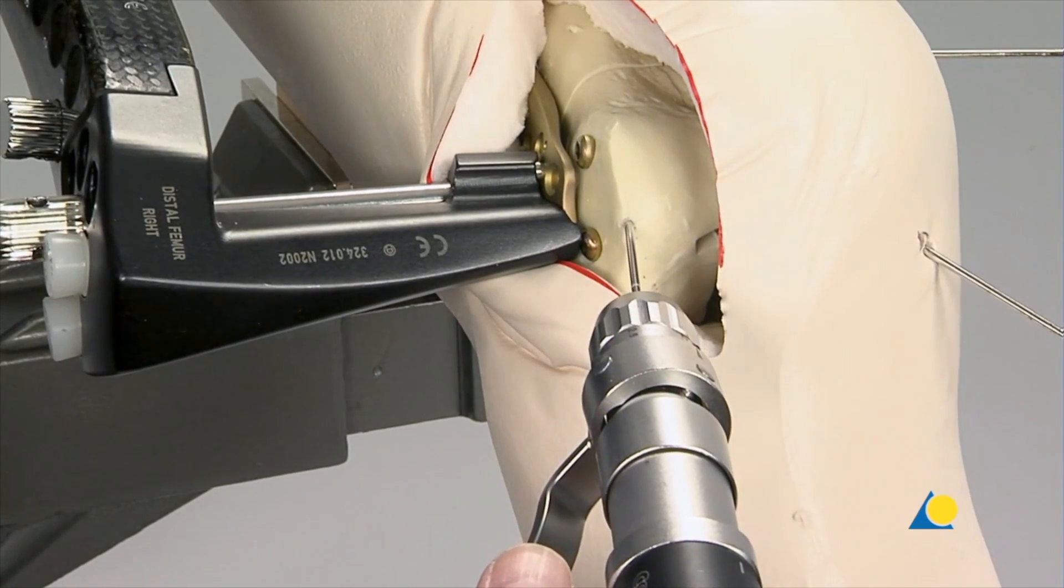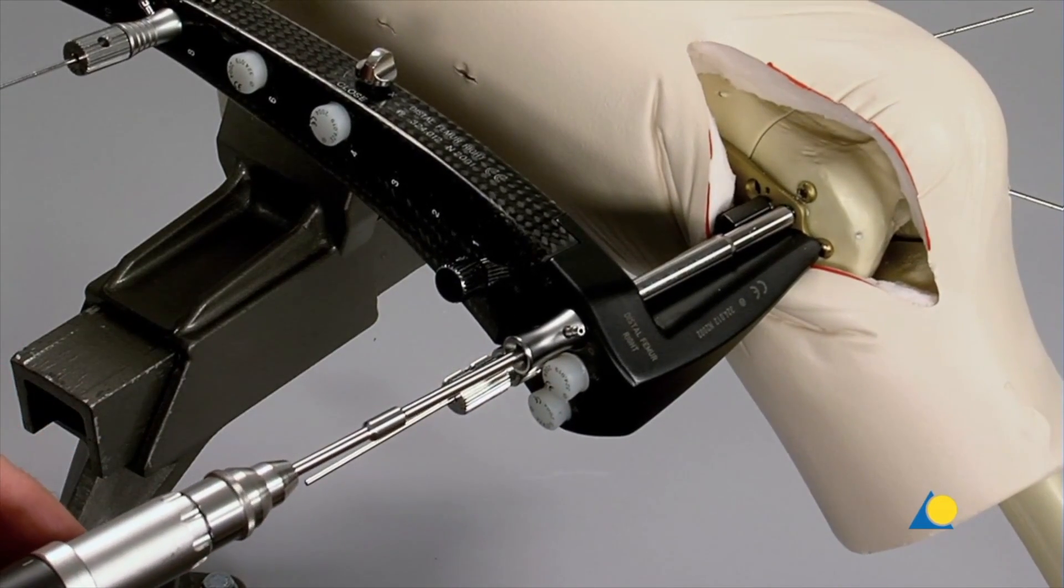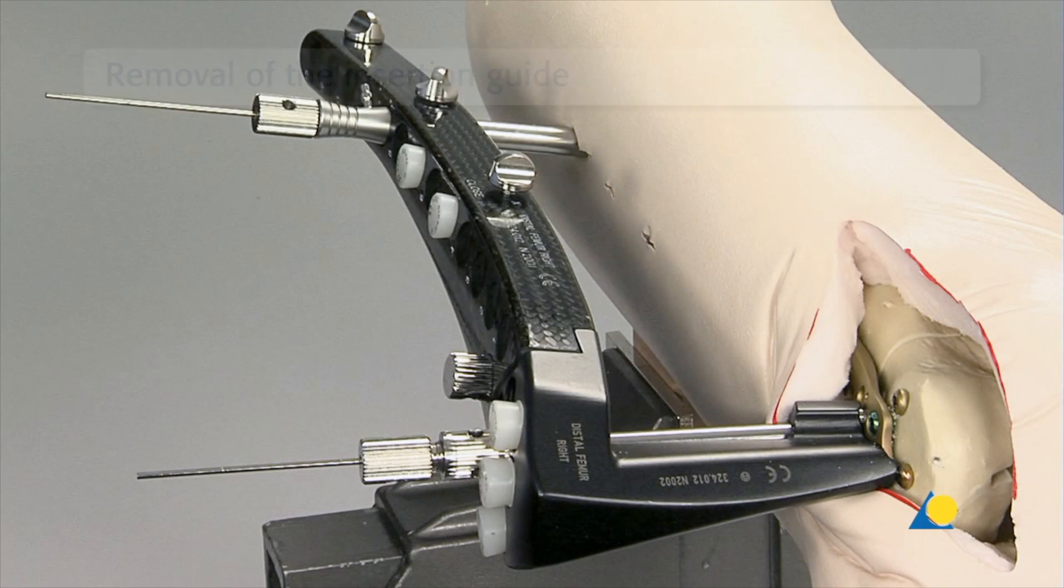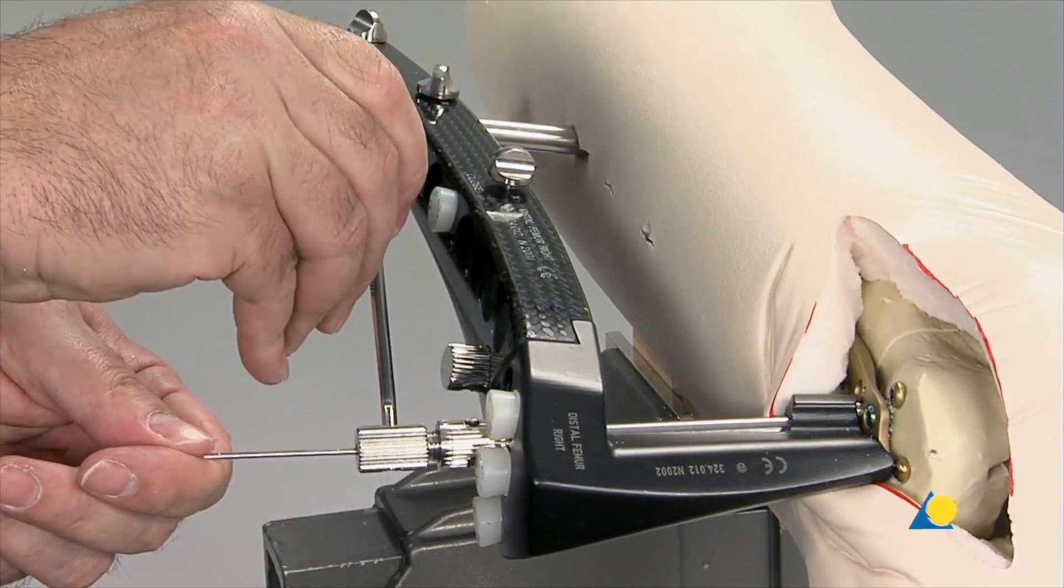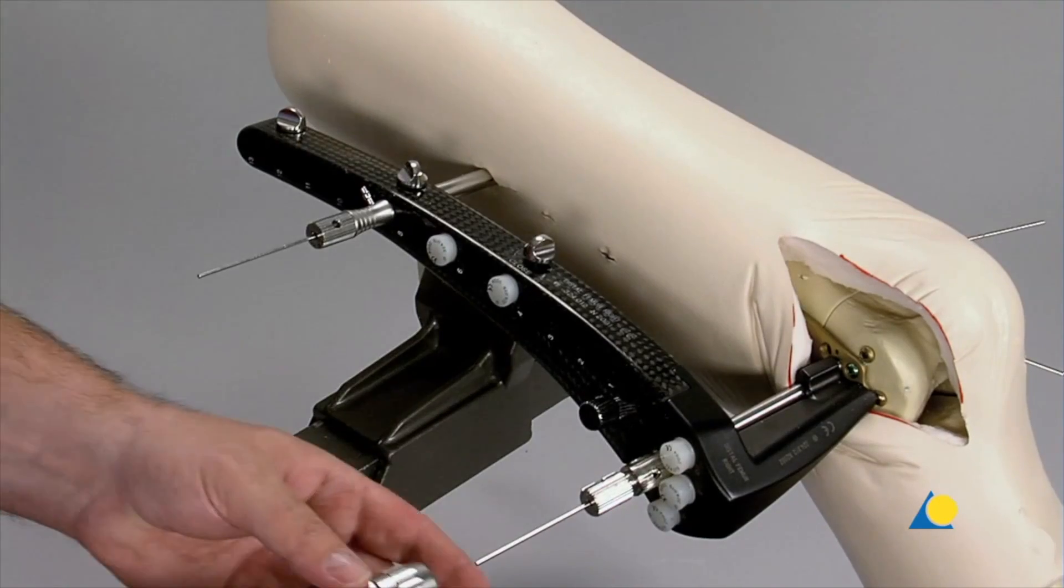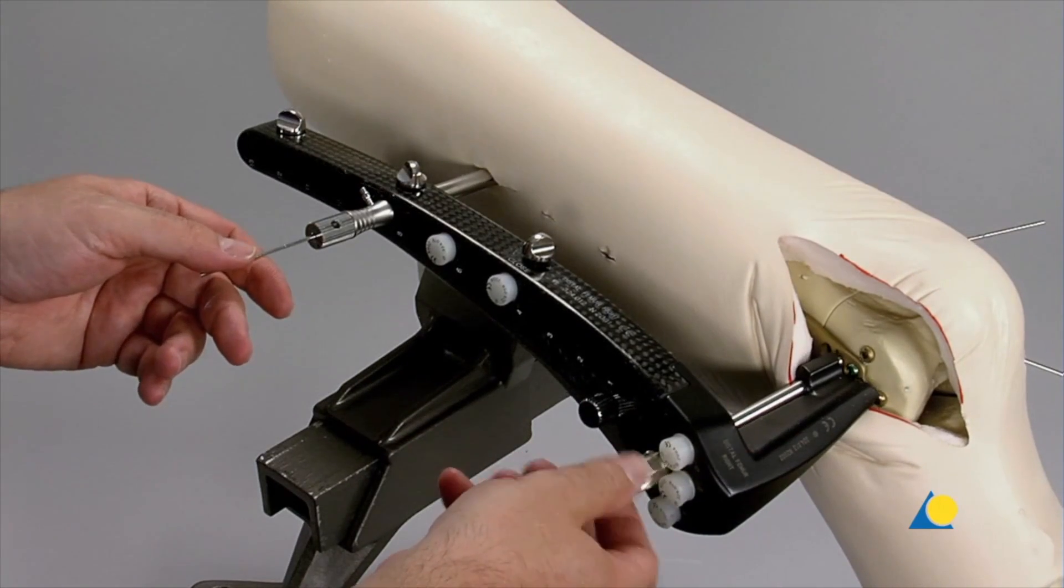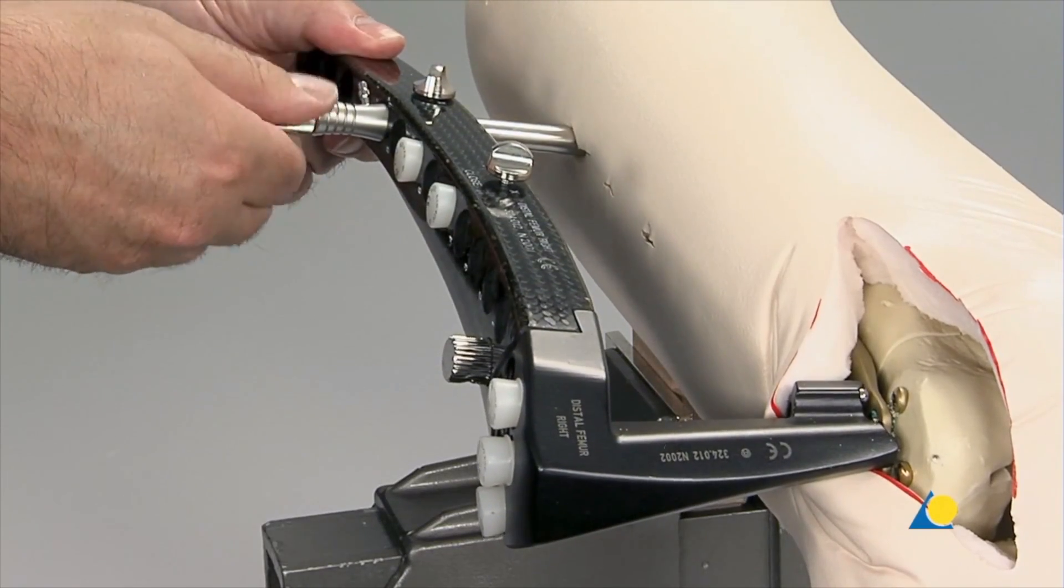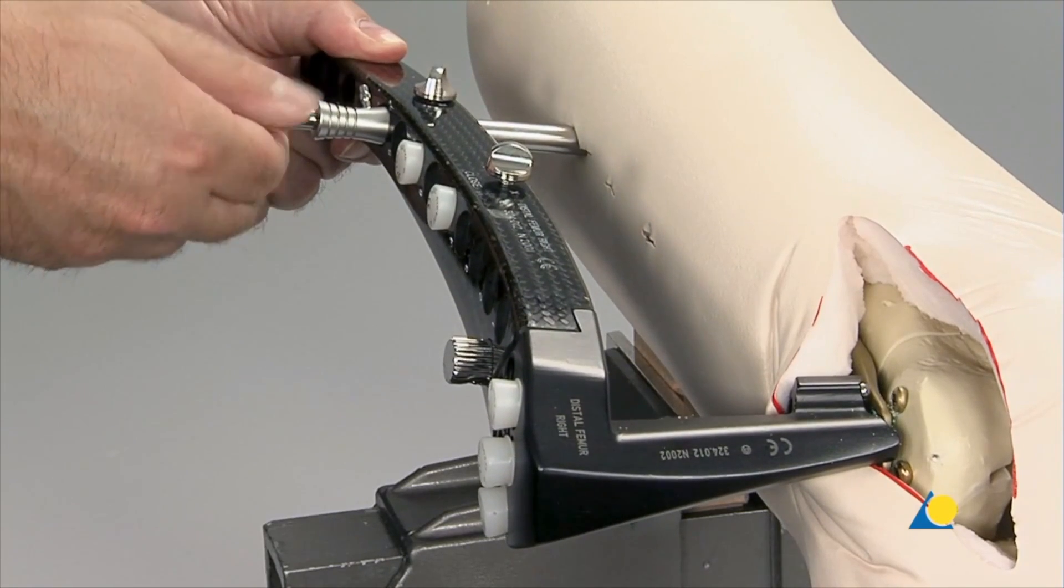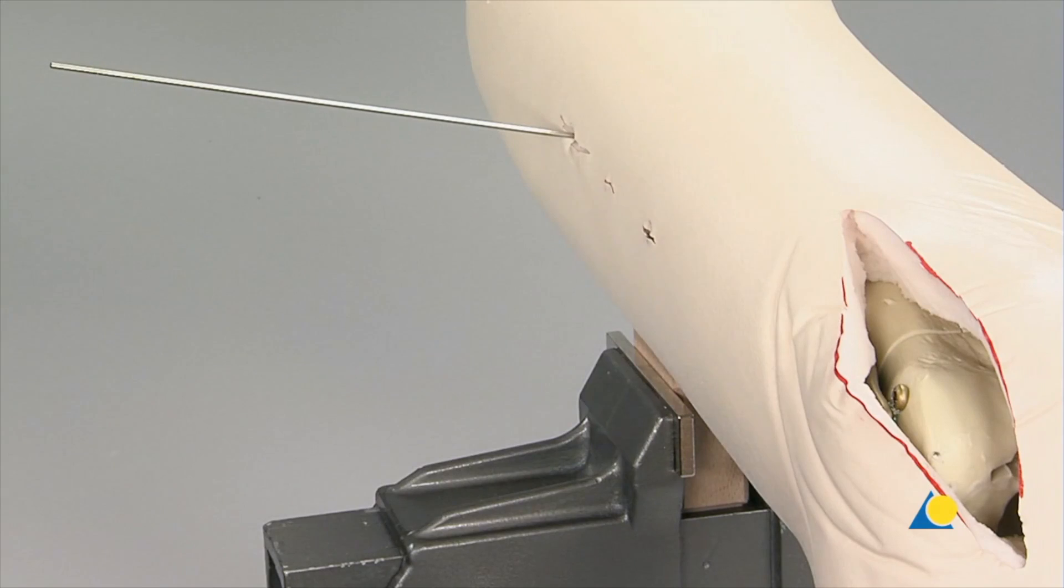Before introducing the next distal screw, the provisional K wire that secured the reduction is removed to avoid any interference during screw insertion. There may be some instability when the proximal end of the insertion guide is used for screw insertion. In this exercise, the last proximal screw will be inserted freehand, so the insertion guide is removed. The distal stabilization bolt is loosened. The K wire and the stabilization bolt are removed. The proximal stabilization bolt is also removed. The insertion guide is now removed, leaving the K wire in place as a guide for the stabilization bolt. The stabilization bolt is slid over the K wire and locked into the plate.